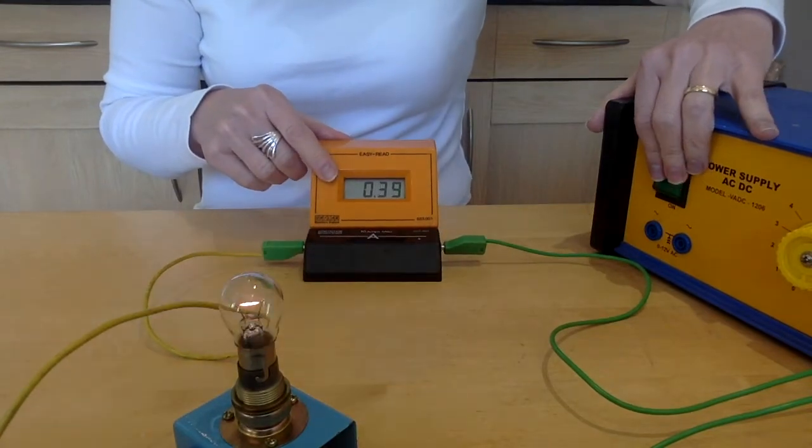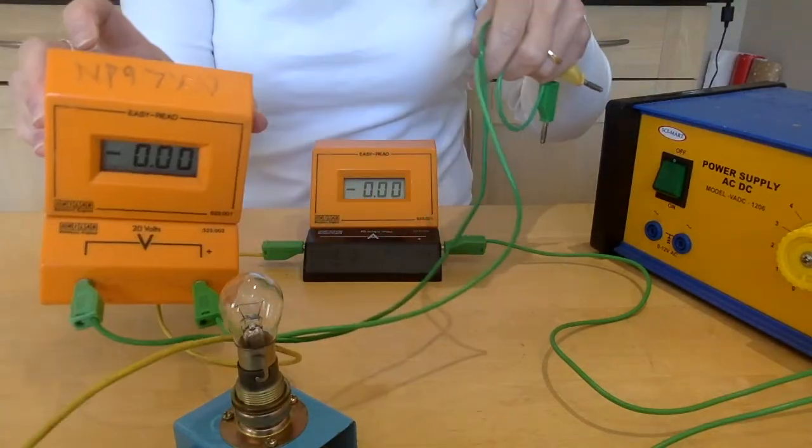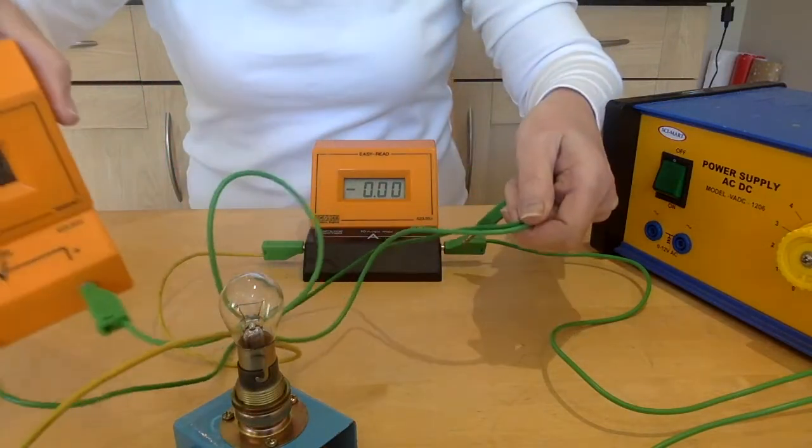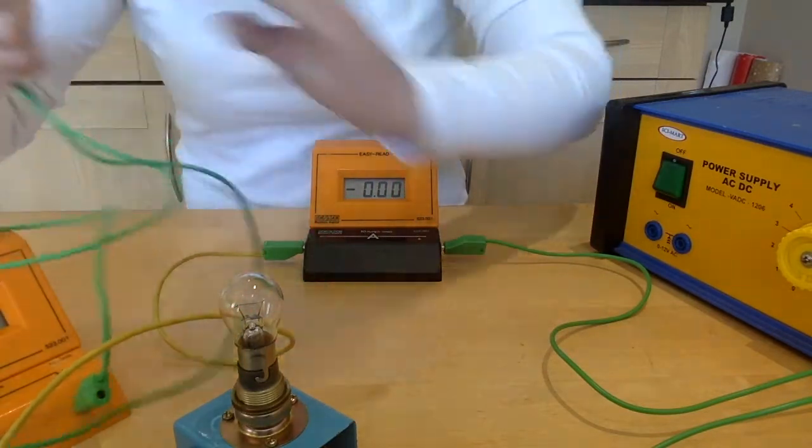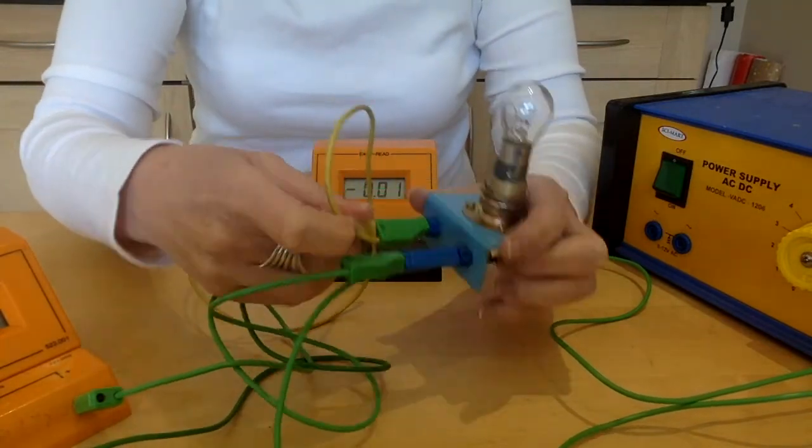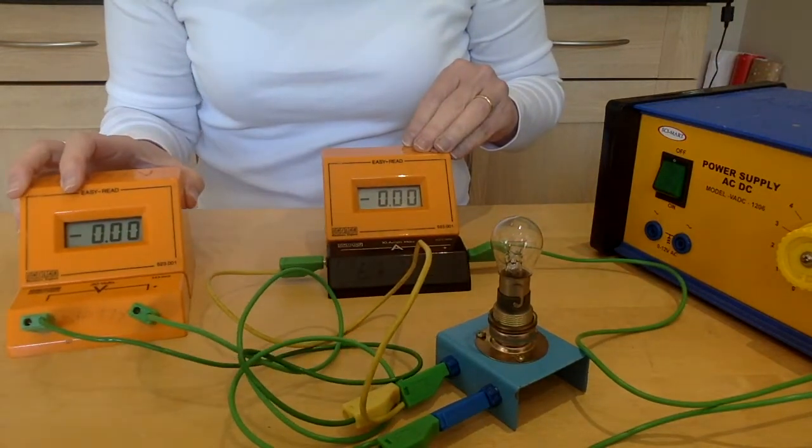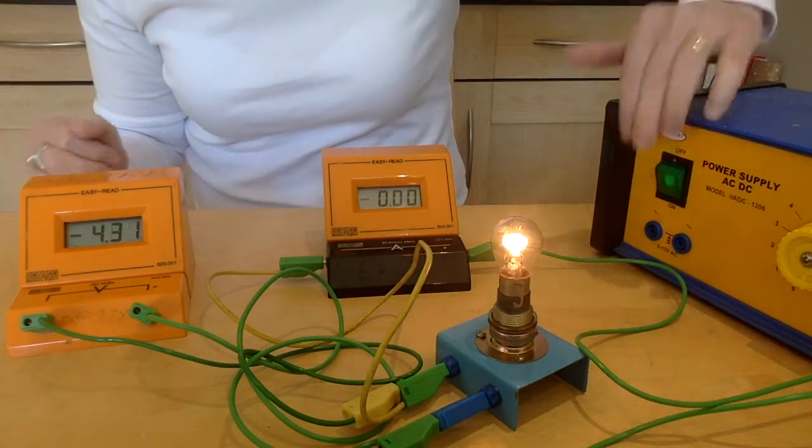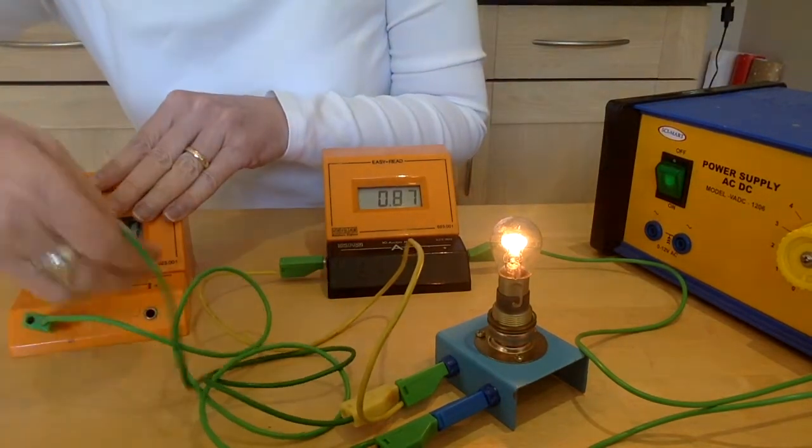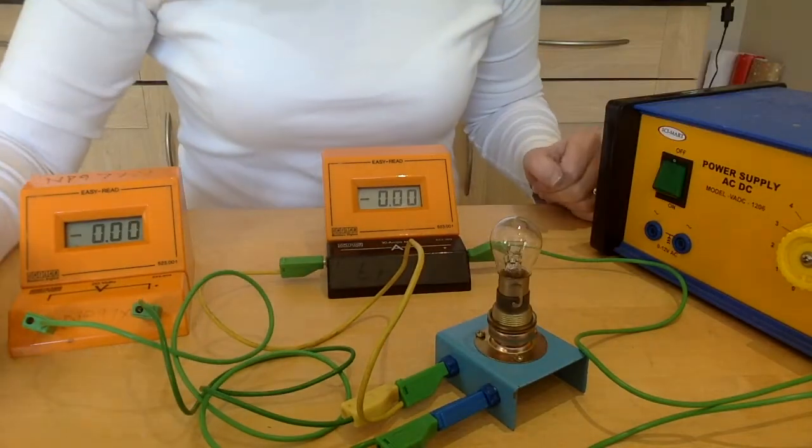This is the ammeter giving me the current readings. Okay now I need the voltage and the voltmeter goes in parallel so it has two leads of its own and it goes here and here. Okay so that's my ammeter giving me the current and that is my voltmeter giving the voltage. Let's just check - I've got a negative on here which simply means I've got the leads over.